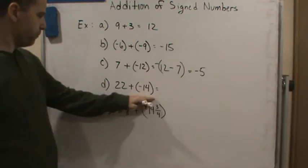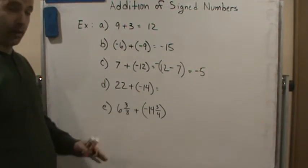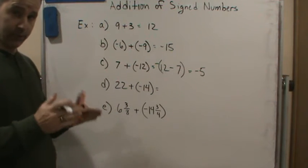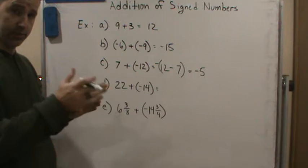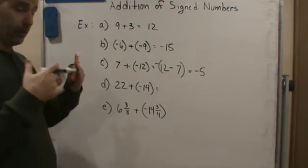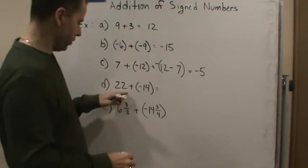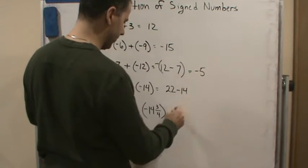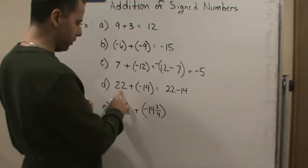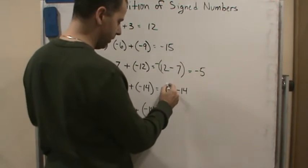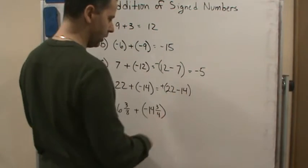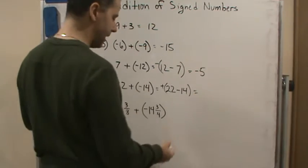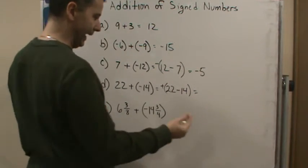Same thing here — they have opposite signs, so that means I'm going to subtract their absolute values, smallest from largest, and keep the sign of the larger number. So I'm thinking in my head: I'm going to do 22 minus 14, and since the larger number is positive, the answer is going to be positive. So this gives me a positive 8.